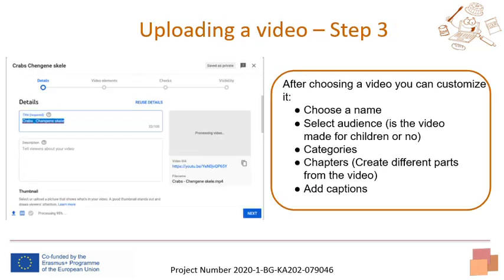After choosing a video, you can configure many options. First of all, you have to pick a name for it and write a description in which you can explain what is included in the video clip. You can also put links to other videos or pages in your description.